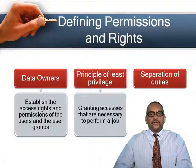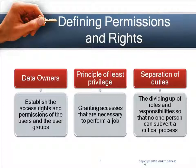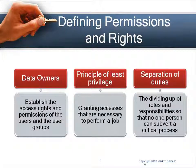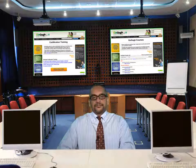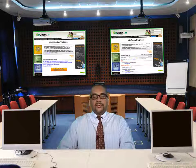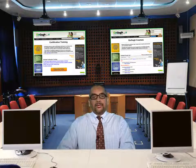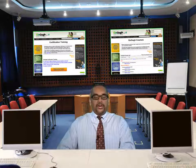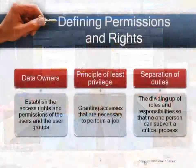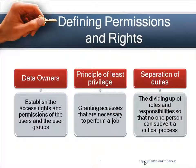We also have segregation of duties, also called separation of duties. This means dividing roles so that one person cannot subvert a critical process. For instance, the person who creates an account for a vendor can't be the same person who sets the credit limit on that account, because otherwise one person could create a vendor and increase the credit line without authorization.